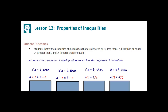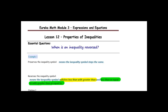Today's lesson is about the properties of inequalities. The essential question is: when is an inequality reversed? In Example 1, let's go through some vocabulary. 'Preserves the inequality symbol' means the inequality symbol stays the same. 'Reverses the inequality symbol' means the inequality symbol switches less than with greater than, and less than or equal to with greater than or equal to.